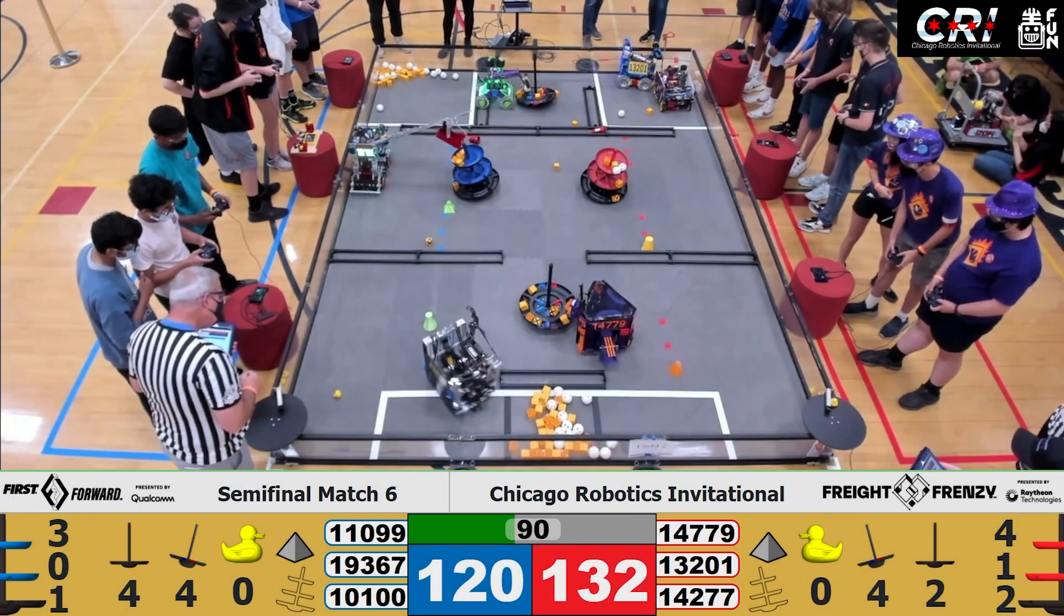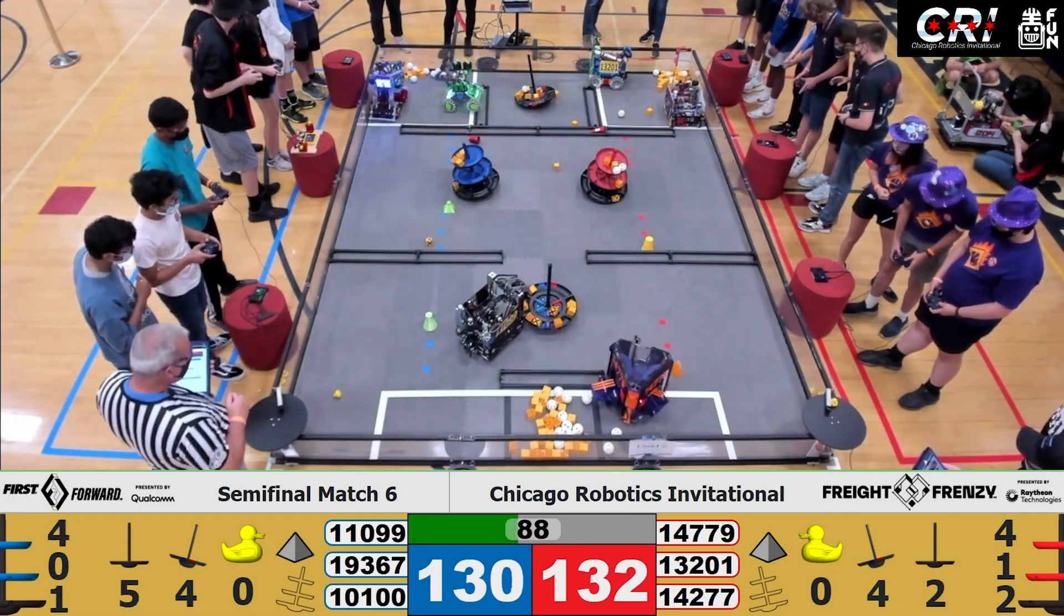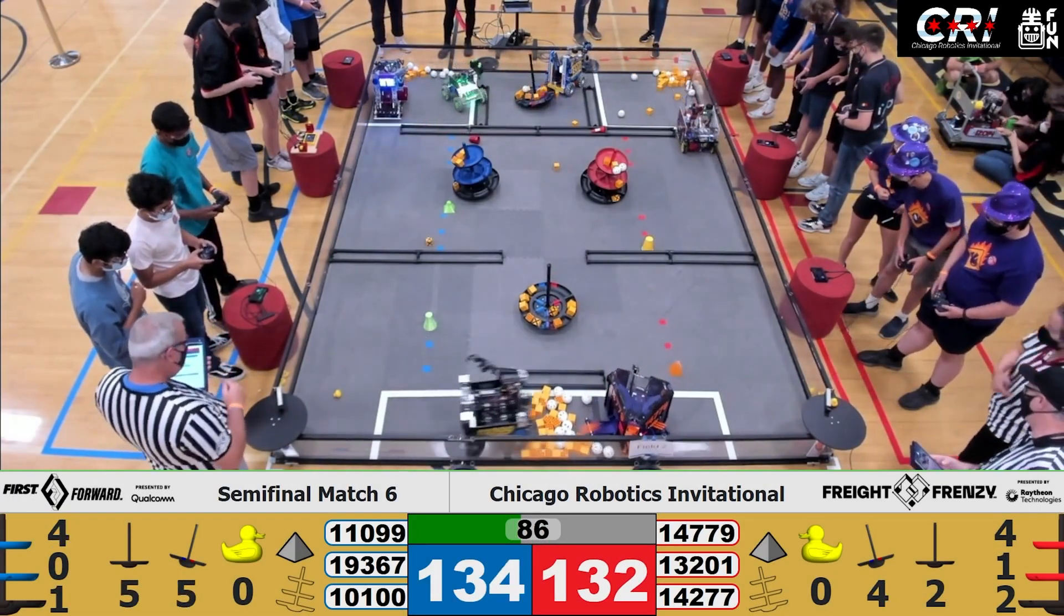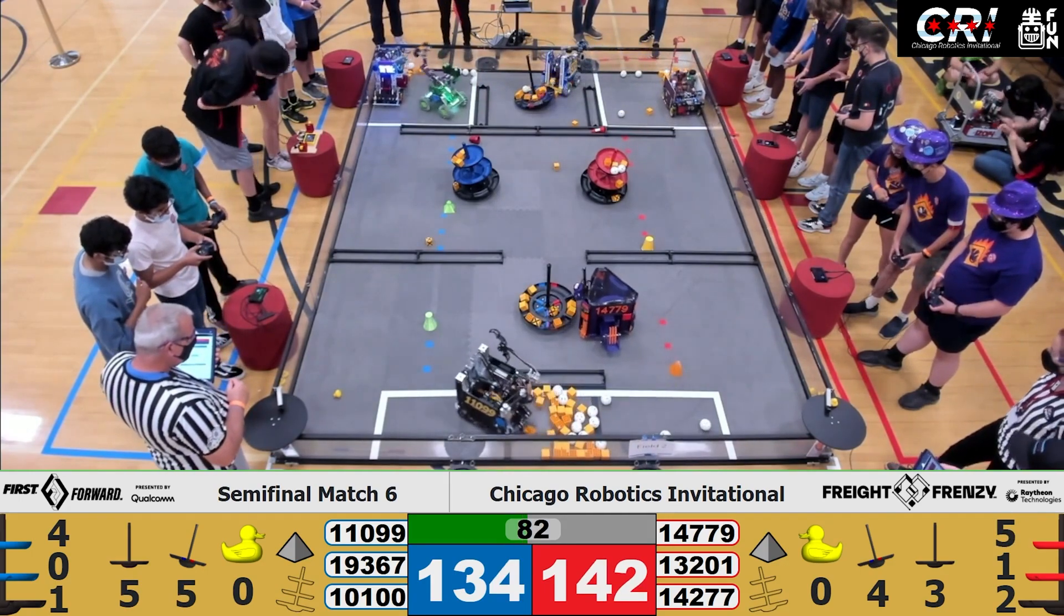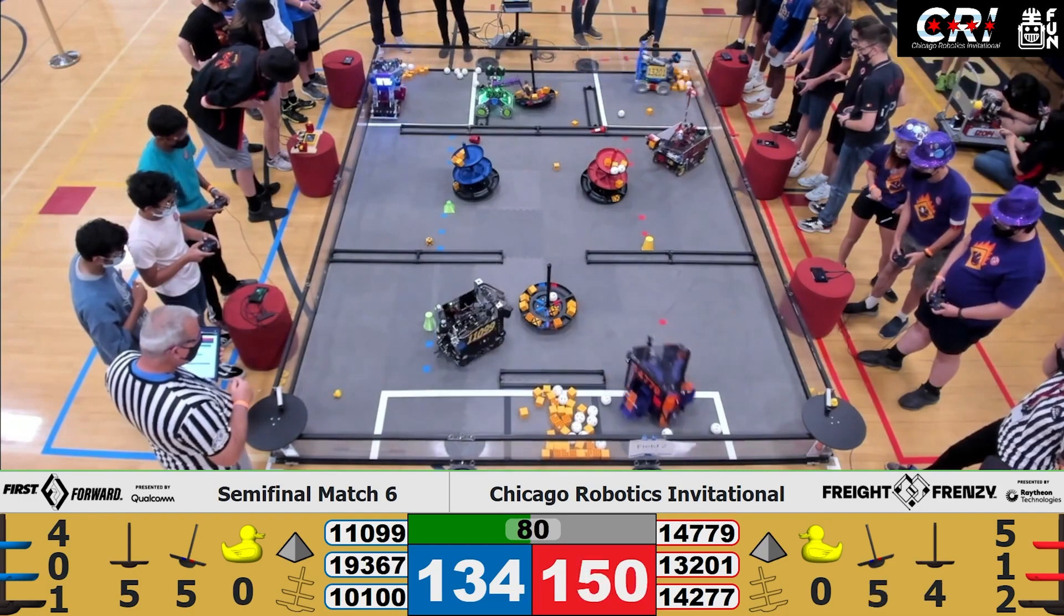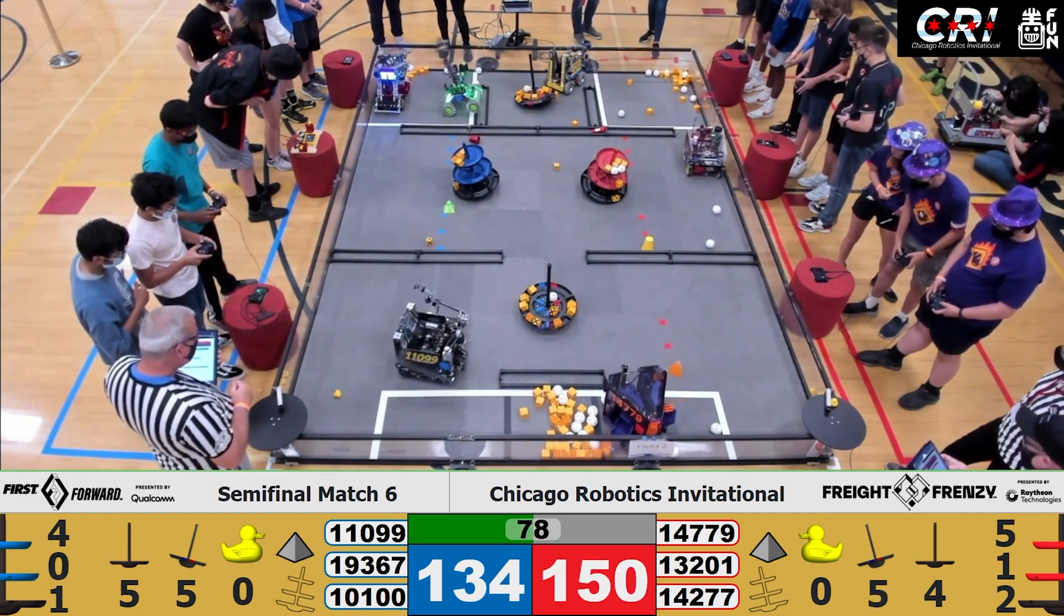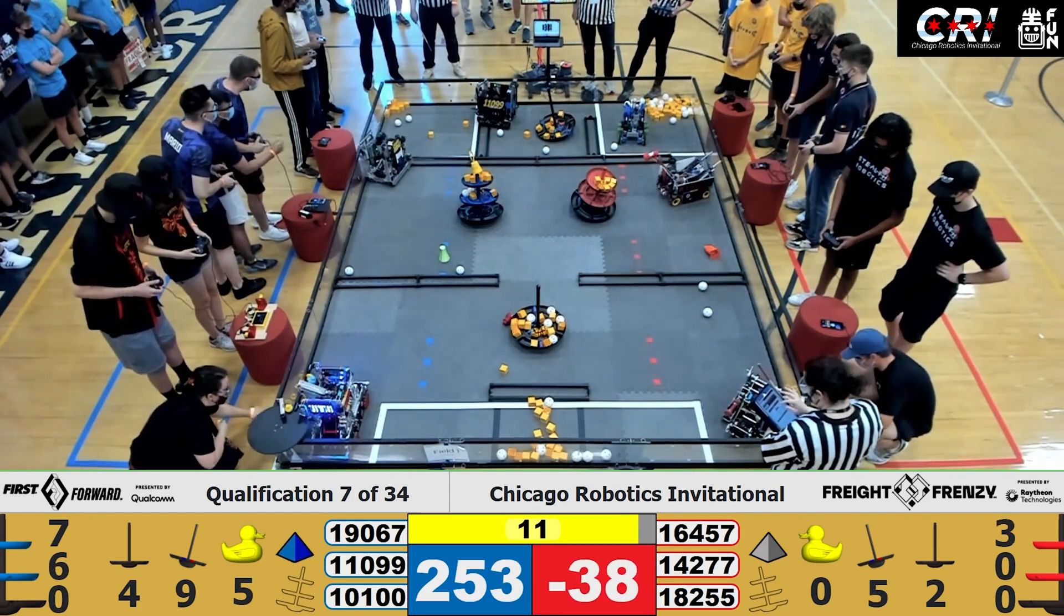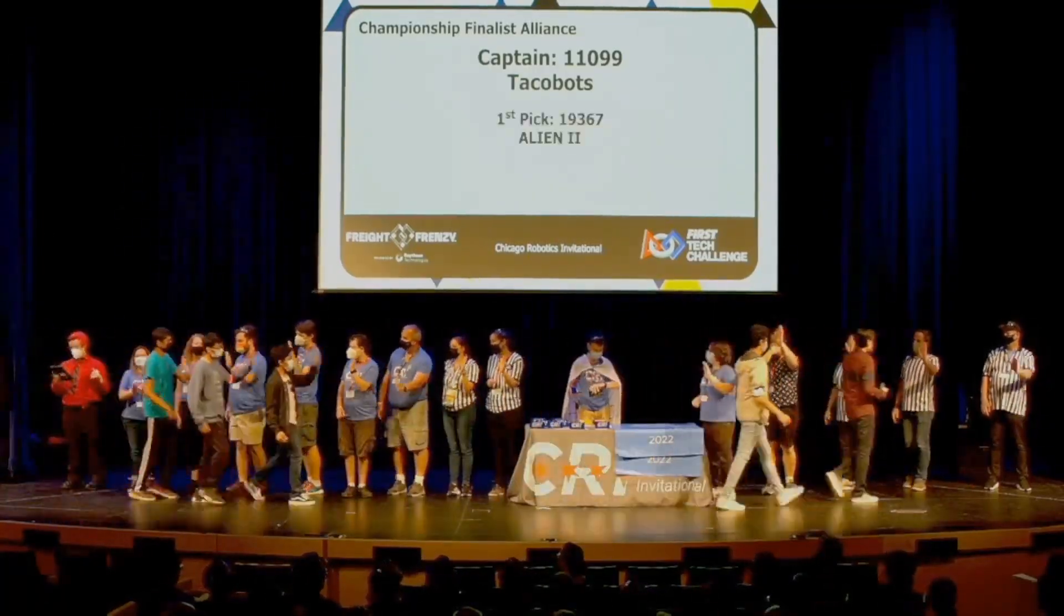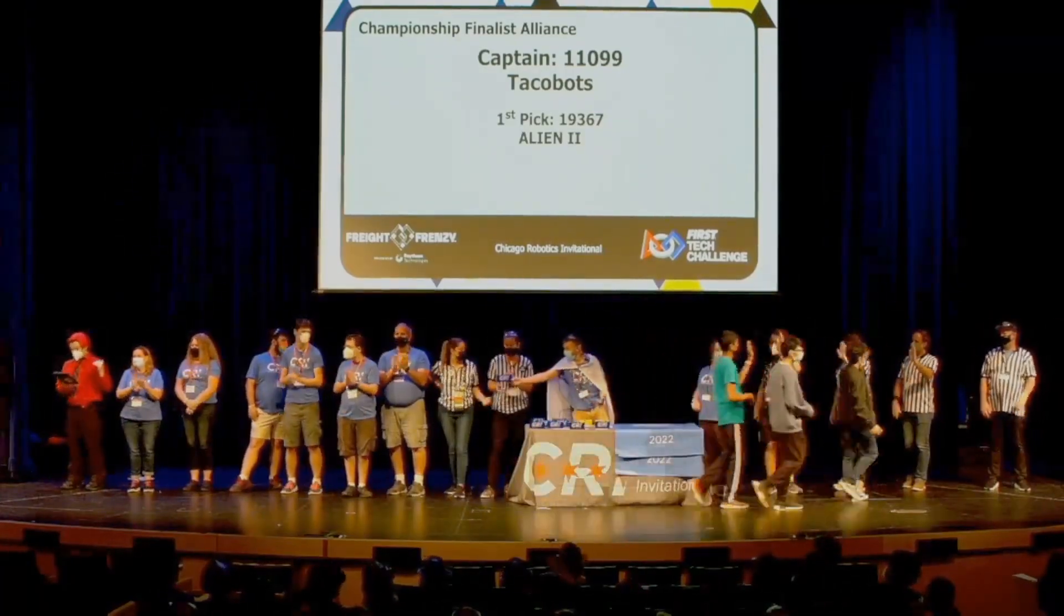Blue Alliance Hub on the front side of the field. 11099 delivering freight to the blue side of the cooperative tub. Taco Bots on the back side of the field for Blue, continuing to store freight. Team 11099, Taco Bots from Fremont, California.